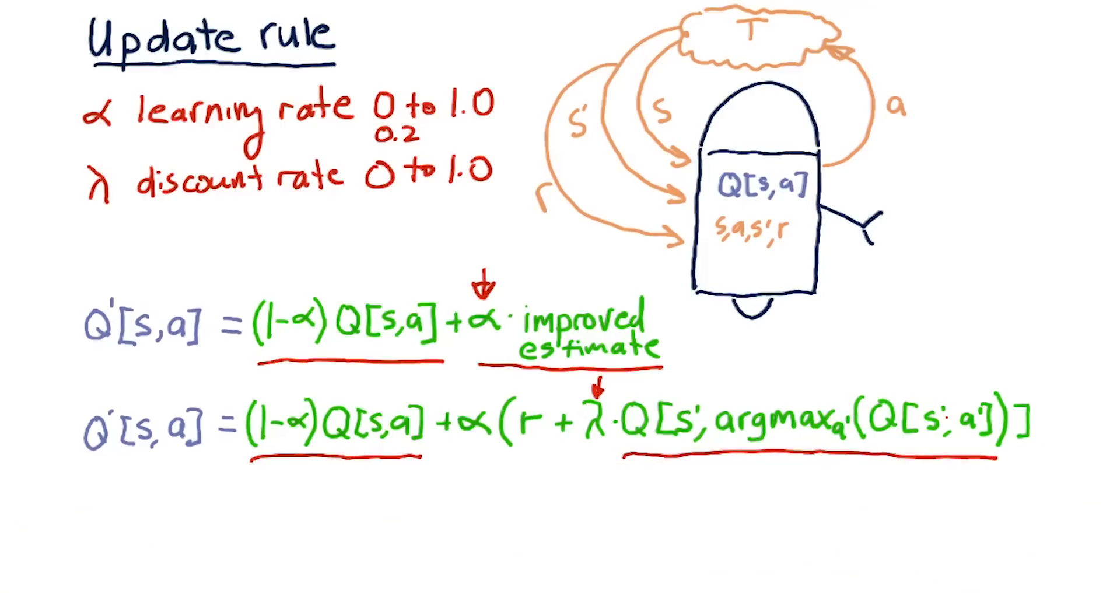So that allows us to bring it all together now. So our update rule is the following. Our new Q value in state S action A is that old value multiplied by 1 minus alpha. So depending on how large alpha is, we value that old value more or less, plus alpha times our new best estimate. And our new best estimate is, again, our immediate reward, plus the discounted reward for all of our future actions. And that's it. This is the equation you need to know to implement Q learning.